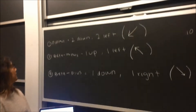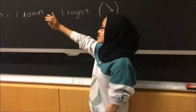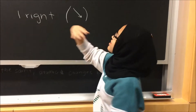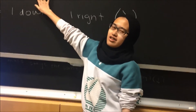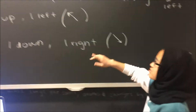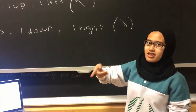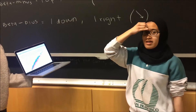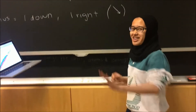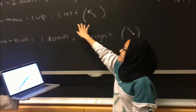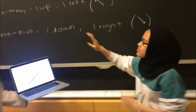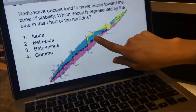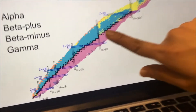Now let's talk about beta minus. In beta minus, you're shooting out an electron, so a neutron becomes a proton. From the cheat sheet, you gain a proton — going up one — and you lose a neutron — going left one. So beta minus movement is up and left. On the graph, that's the pink region, moving up and left until it reaches the black stable region.